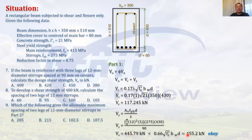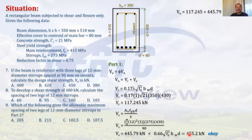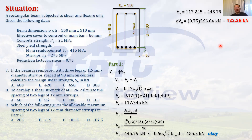Now we have Vc = 117 kN and Vs = 445 kN. Note: if Vs had exceeded the limiting value — for example 460 kN — you must not use 460; you must use the limiting value instead. So Vn = 117 + 445 = 563 kN. The design shear strength is φVn = 0.75 × 563 = 422.28 kN. The answer is letter B, approximately 420 kN.